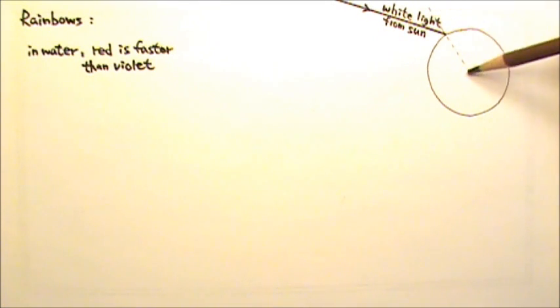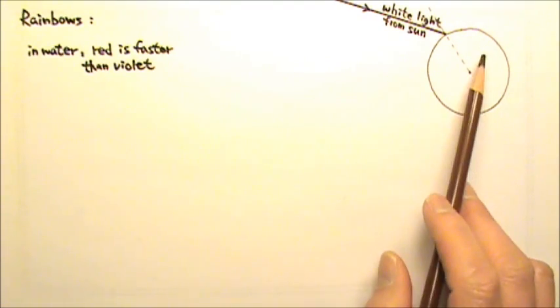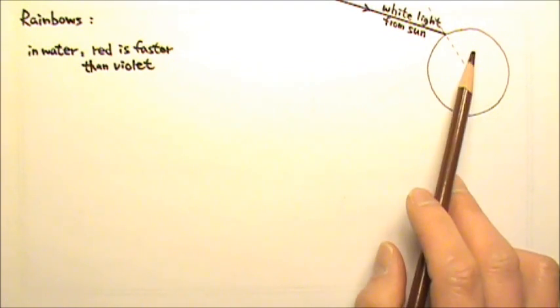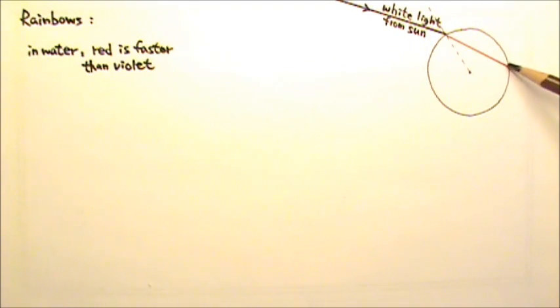First, I drew a normal line that is perpendicular to the spherical surface. Which means this normal line is the radius. When light goes from air into water, it slows down, so the angle gets smaller. I'm drawing the red light first.